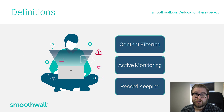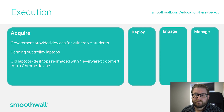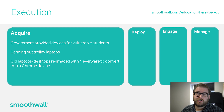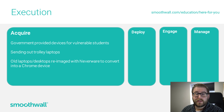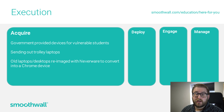So those are our definitions of the tools. Let's move on to look at how we execute and deploy those. There are four main stages of an execution process across remote devices: step one — acquire the devices; step two — deploy; step three — engage colleagues as needed; step four — manage and maintain those after deployment.